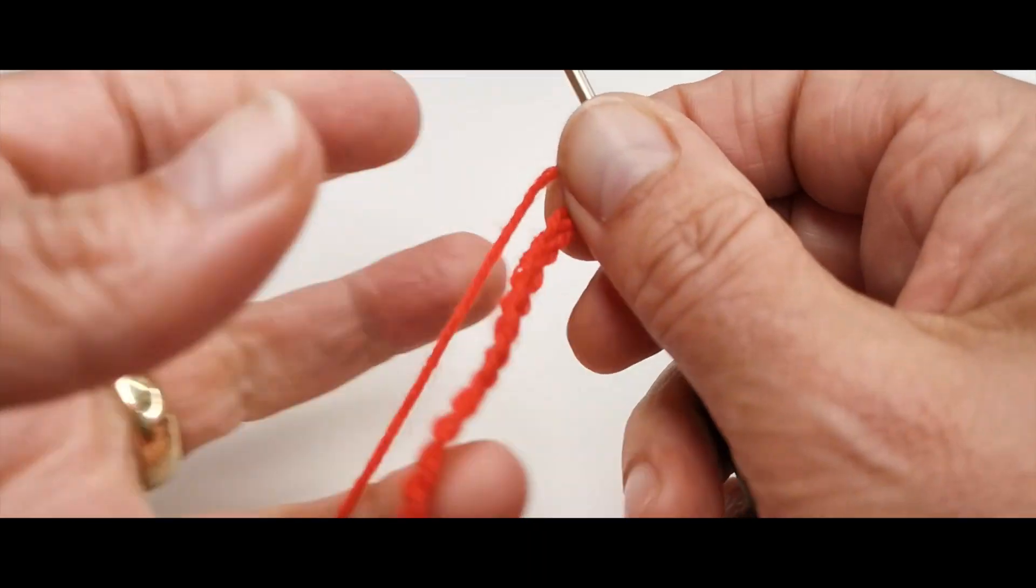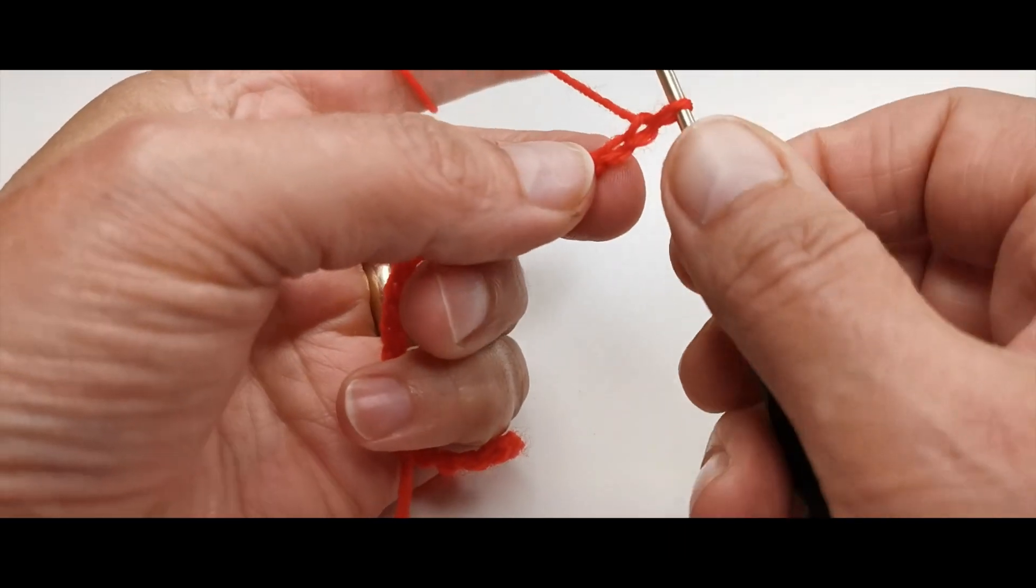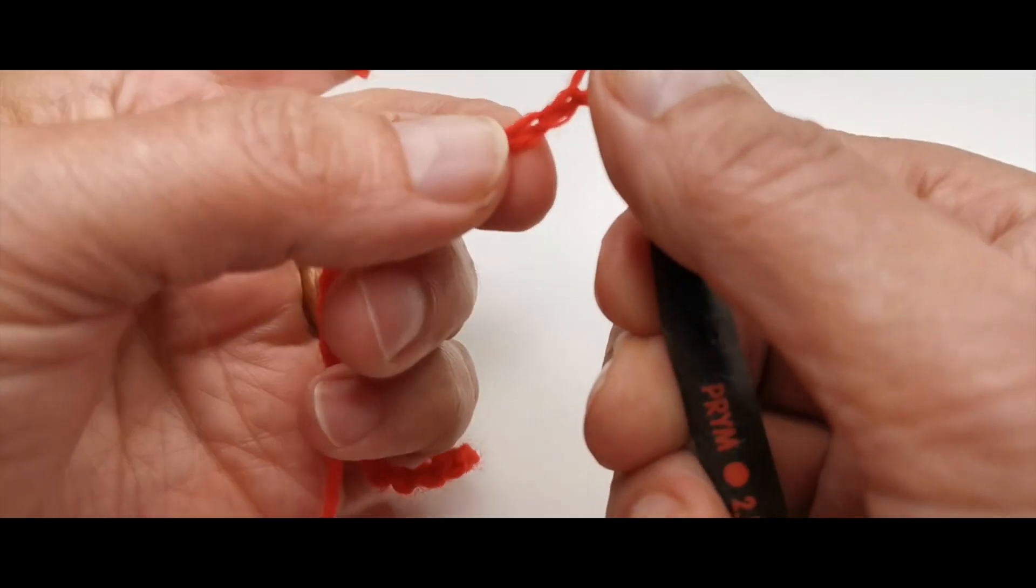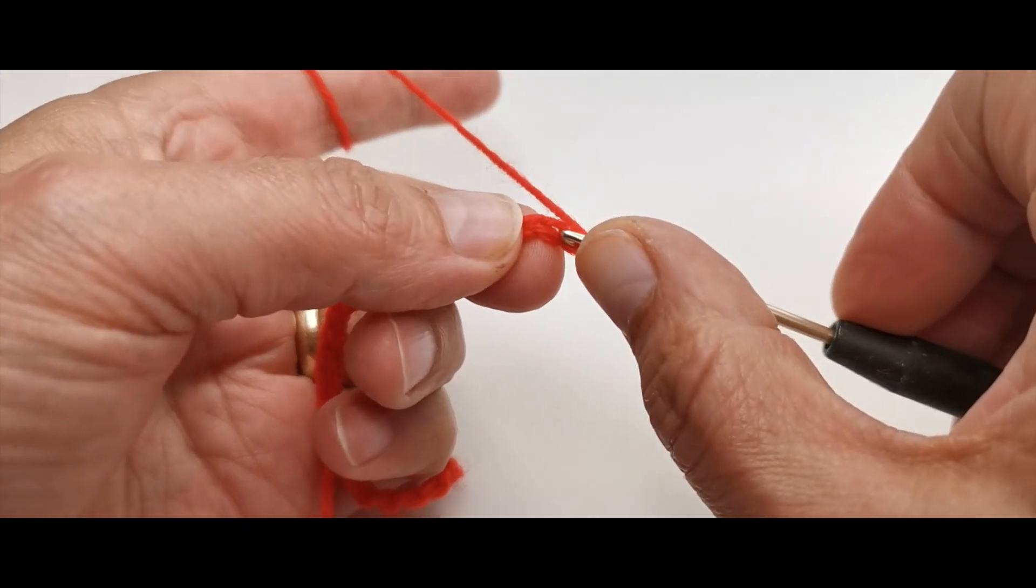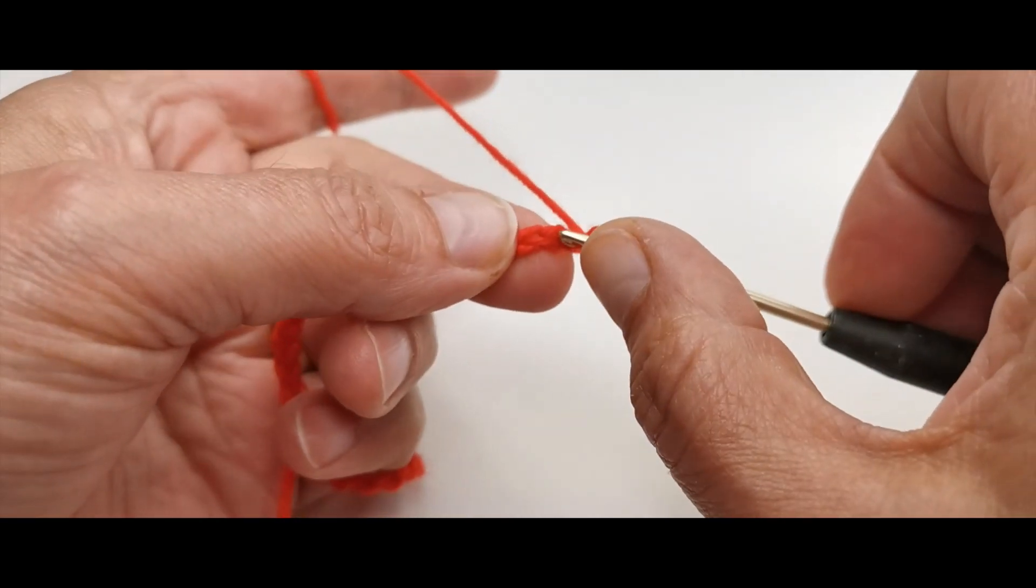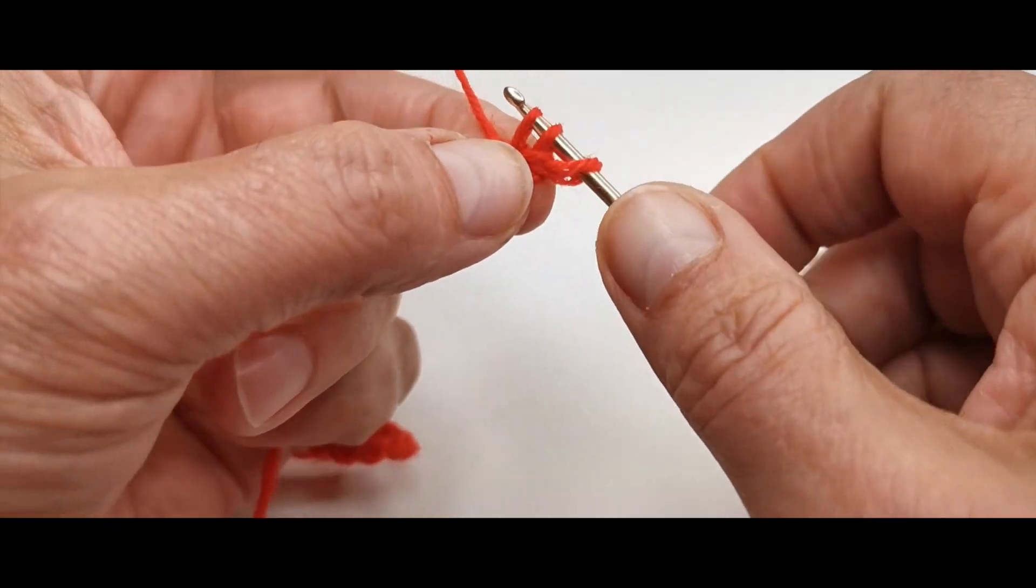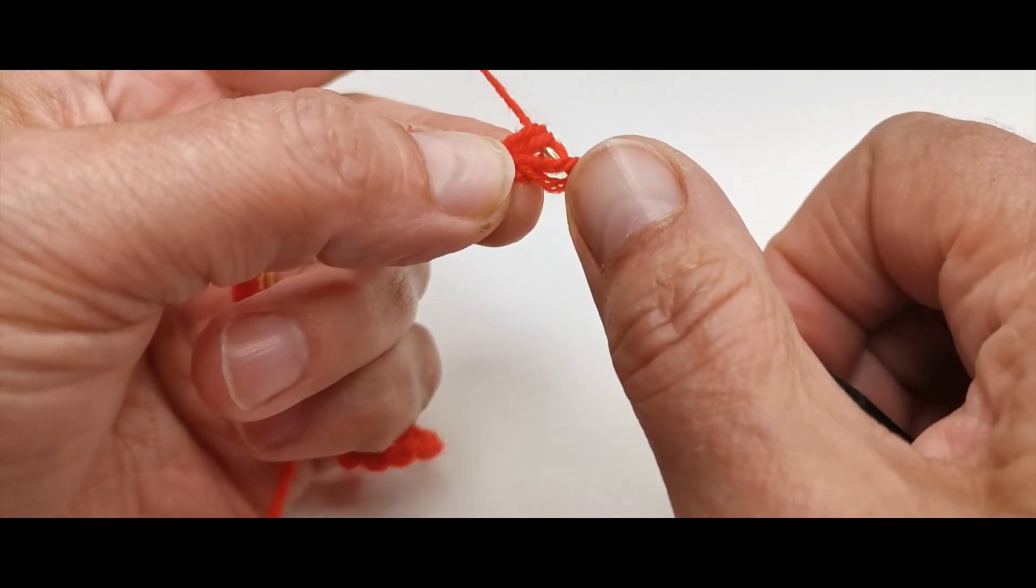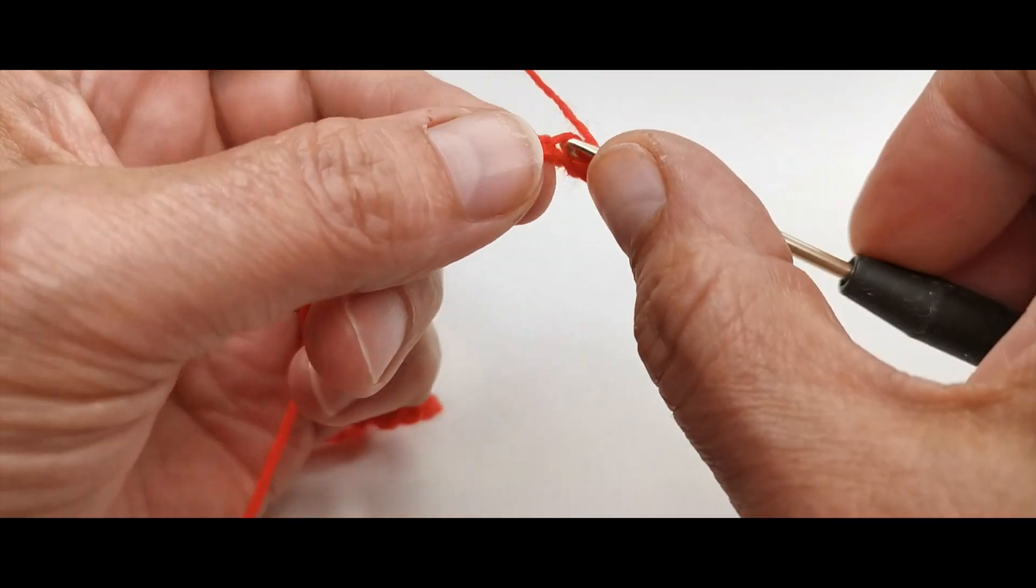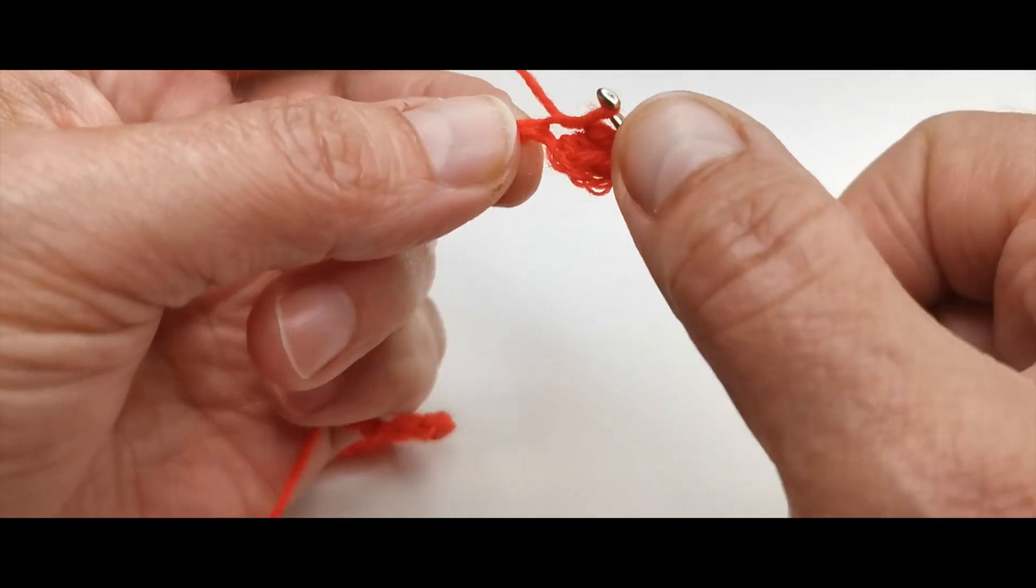Und jetzt häkeln wir in die zweite Luftmasche, also nicht die da, sondern die da, drei halbe Stäbchen. Das heißt, wir stechen in die Masche ein, ziehen den Faden durch, holen den Faden, ziehen durch alle drei Maschen durch. Wir häkeln ja halbe Stäbchen. Eins, zwei, drei.